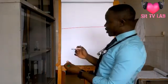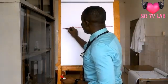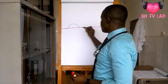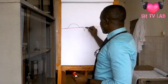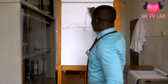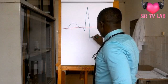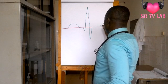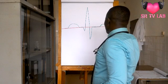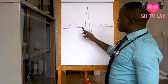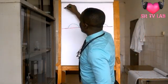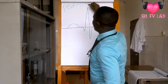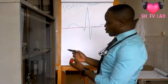This is the isoelectric line — there is no wave here. Then we start with one wave: P wave. There is another one that goes down here. This is how the ECG looks like — PQRST waves — that is what we are going to see today.